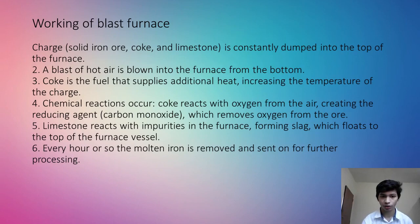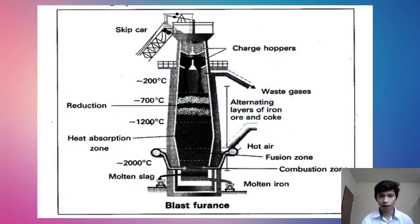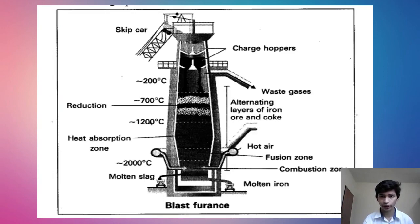Every hour or so, the molten iron is removed and sent on for further processing. A skip car is used for transferring ore, which is poured into the blast furnace. Hot air is blown in and waste gases are released. From this furnace we get three products: molten slag, molten iron (pig iron), and waste gases like CO2.